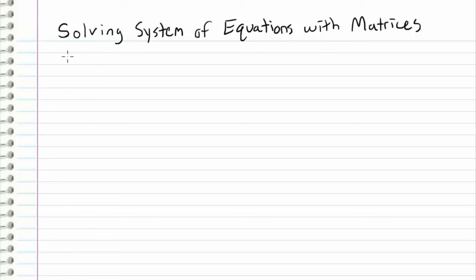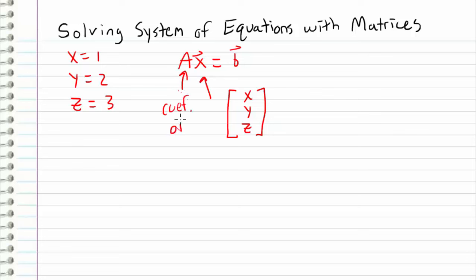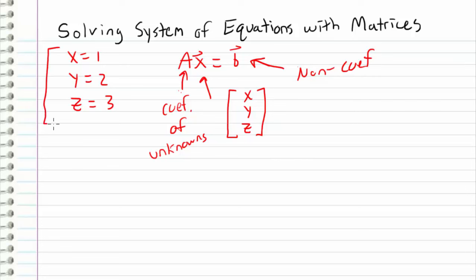Let's start off by considering a really simple case. Let's say that we have x is equal to one, y is equal to two, and z is equal to three. How can we express this in terms of Ax equals b? Well, we know that vector x represents our unknowns — x, y, and z. Since we're multiplying these unknowns by a matrix A, matrix A has to be the coefficients of our unknowns. And that leaves vector b as the non-coefficient numbers included in our three equations.